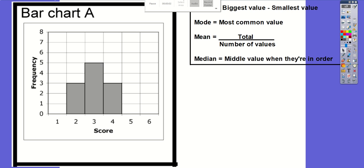Hello Year 7. I'm going to be making a series of videos to help you get through the work that I'm going to be setting over the course of however many weeks. The first piece of work I'm going to set on Monday is going to be on what we covered in the last lesson last week, which is mean, median, mode and range — the averages and the range — but when the data is not presented as a list, when it's given as a bar chart.